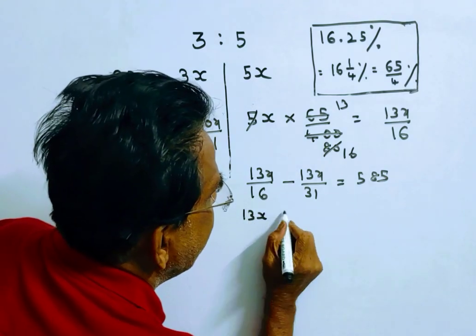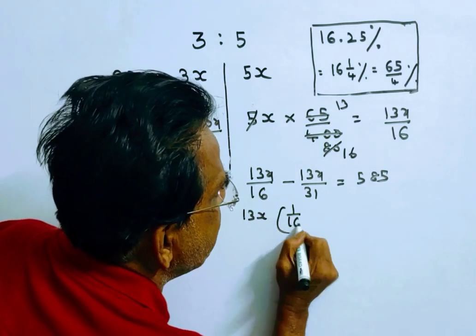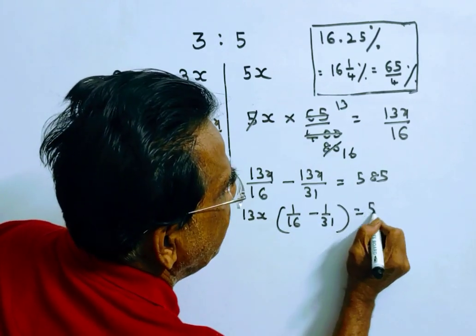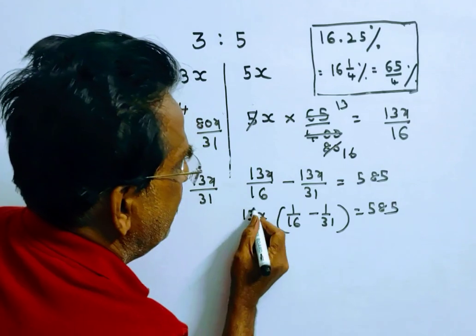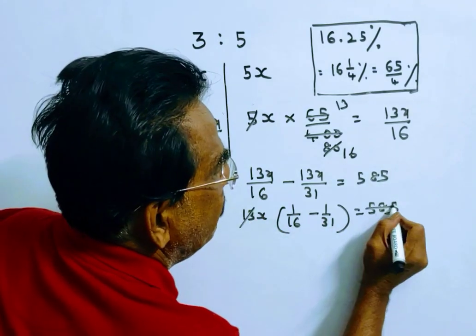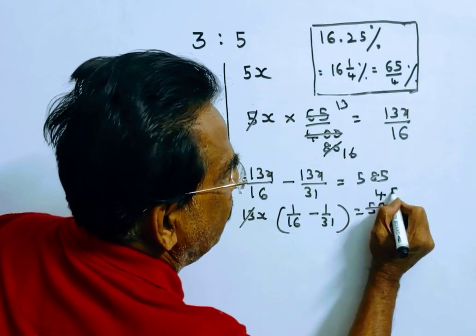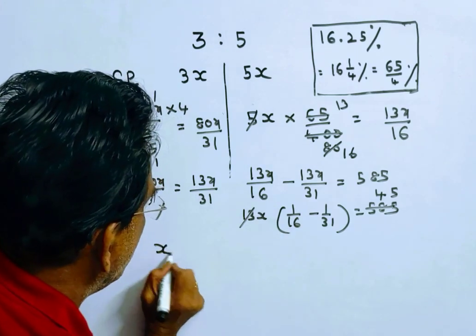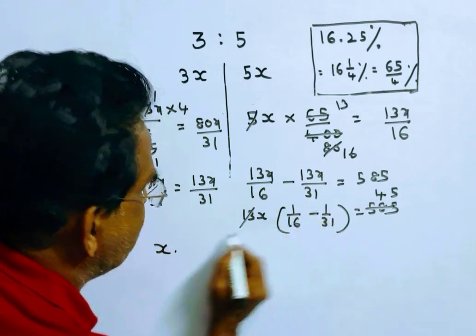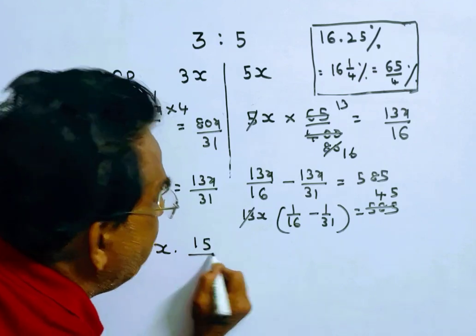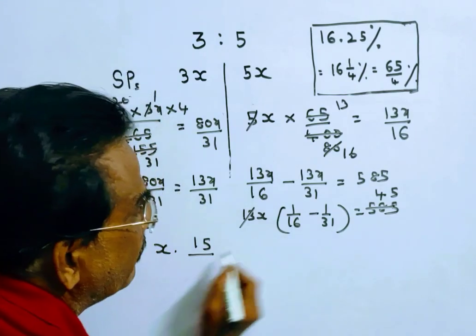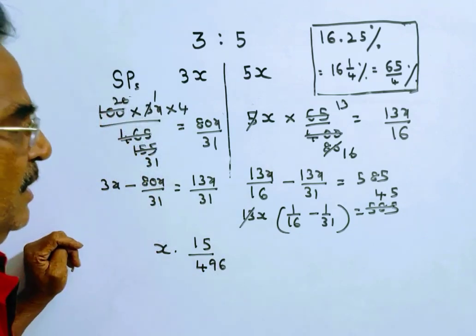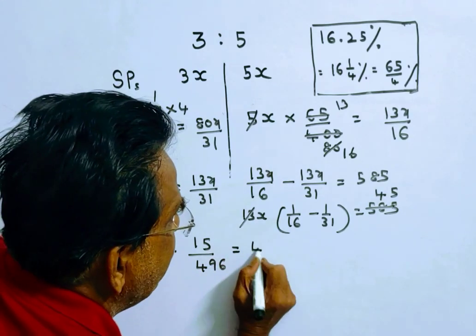13x multiplied by (1/16 minus 1/31) is equal to 585. So 13x multiplied by (31 minus 16) divided by (16 × 31) = 585, which gives 13x × 15/496 = 585.